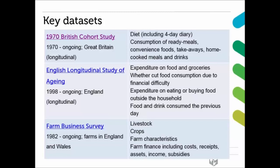We have the 1970 British Cohort Study, which is a longitudinal study. It has data about diet, including a four-day diary. It has information about consumption of ready meals, convenience foods, takeaways, home-cooked meals, and drinks. It has questions such as what type of drinks have you consumed in the last seven days — beer, cider, and so on — or the frequency of eating ready meals, whether once a week, twice a week, and so on.